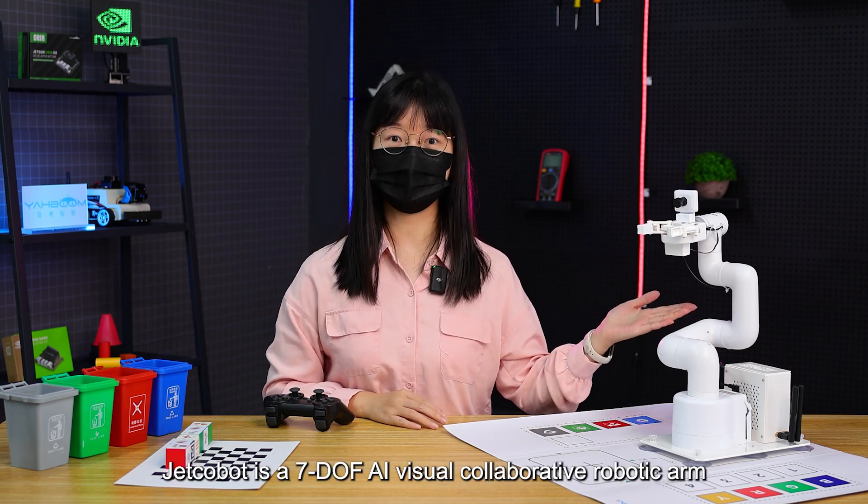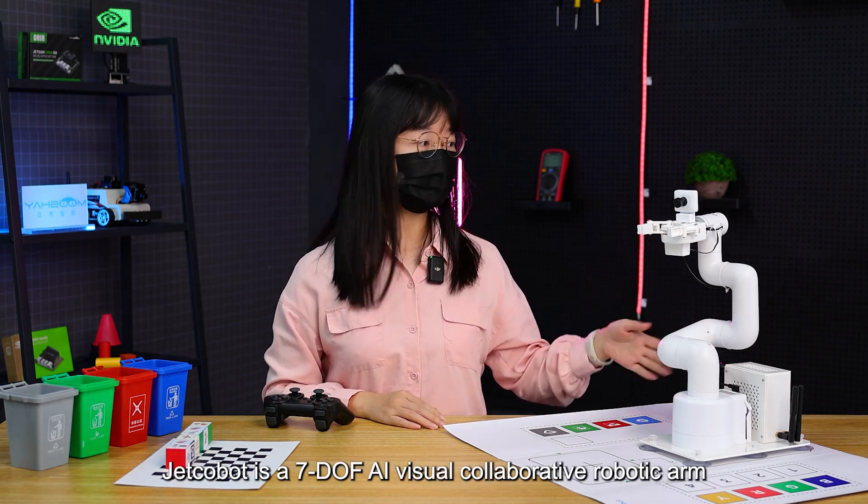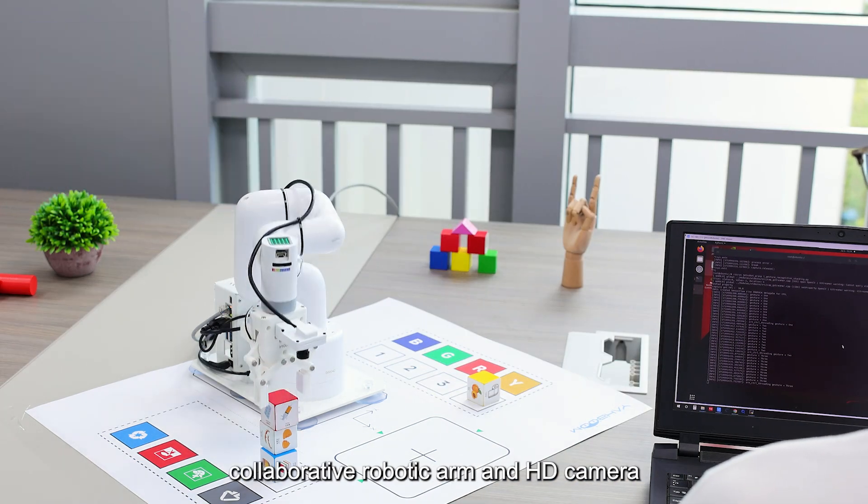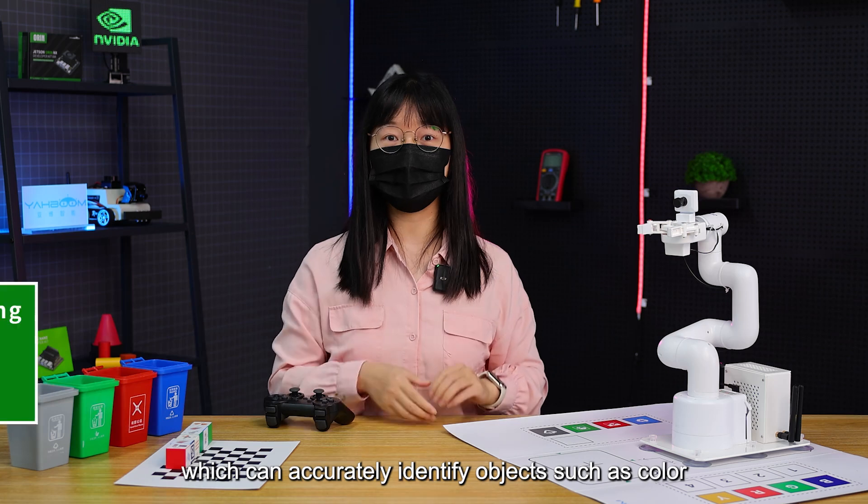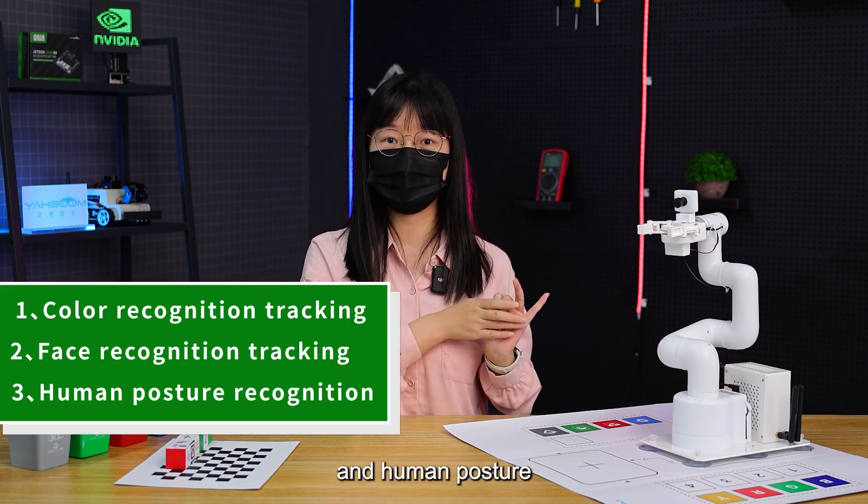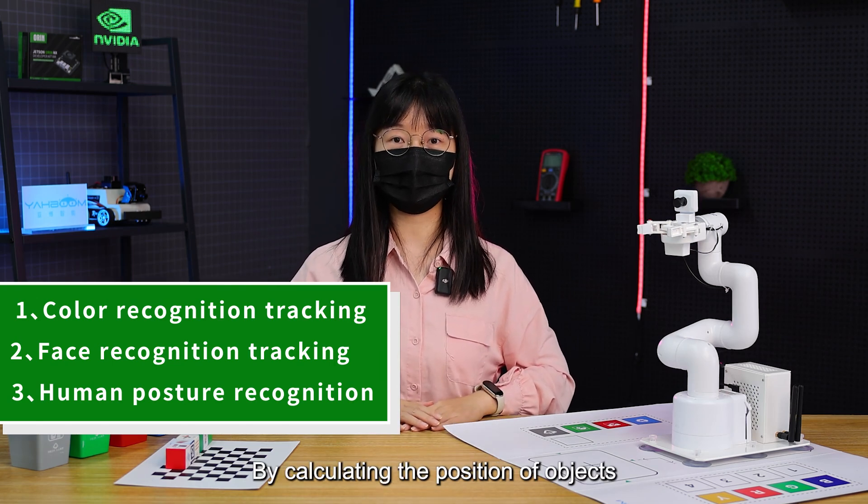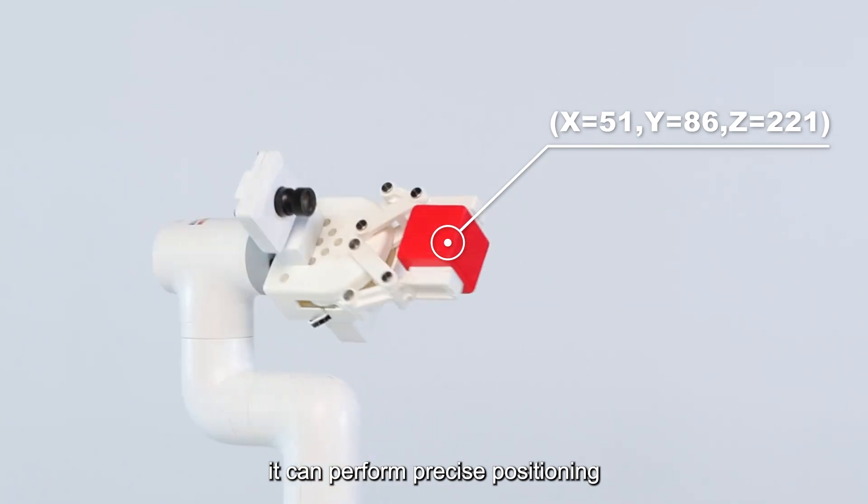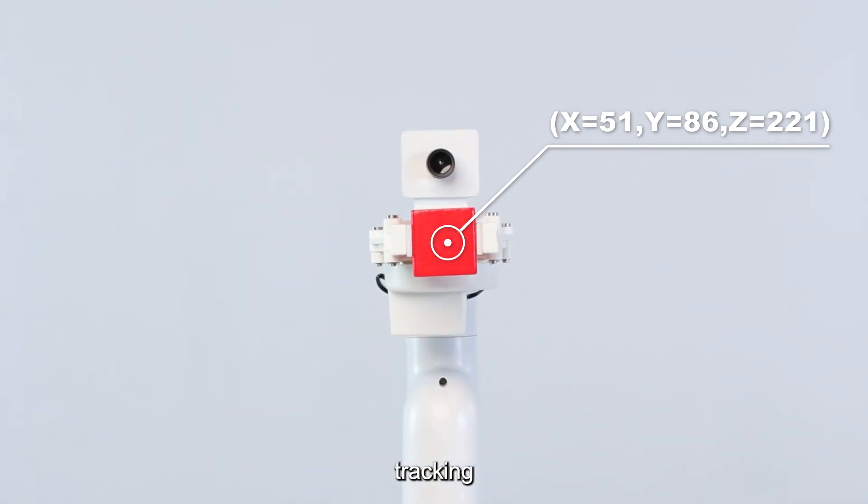JetCobot is a 7-DOF AI visual collaborative robotic arm equipped with Mycobot 280 7-DOF collaborative robotic arm and HD camera, which can accurately identify objects such as color, face, and human posture. By calculating the position of objects through geometric relationships, it can perform precise positioning, grasping, and tracking.